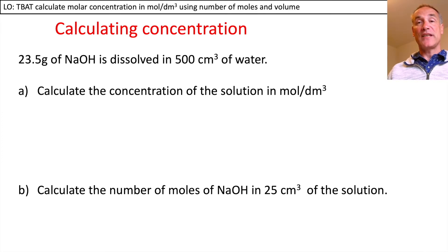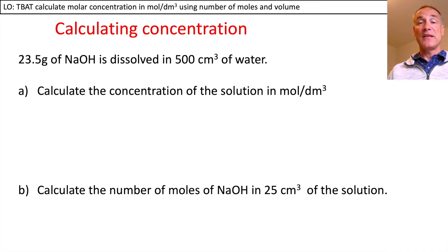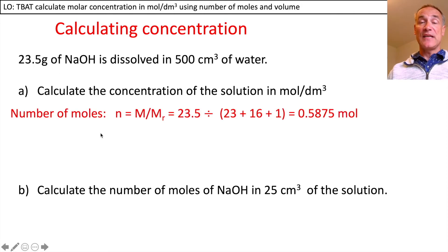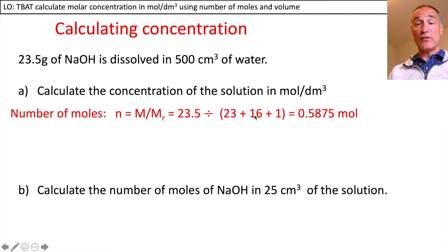This is an example where you first work out the number of moles knowing the mass dissolved. We have 23.5 grams of sodium hydroxide dissolved into 500 centimetres cubed of water. Calculate the concentration in moles per decimetre cubed. First, work out moles: that's mass divided by molar mass. So 23.5 divided by the molar mass of NaOH — sodium, oxygen, and hydrogen — gives us 0.5875 moles.